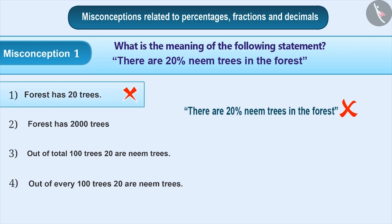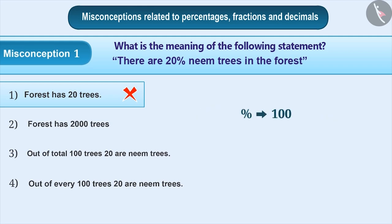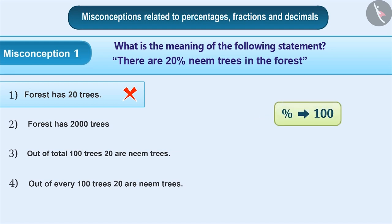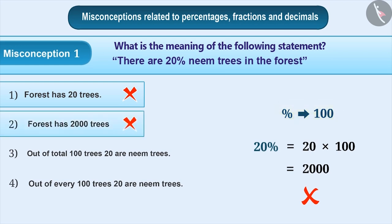Some students know that the percent sign is used in the context of 100, but they get confused with the meaning of percent — whether it is 100 or 1 by 100. This confusion is due to a lack of proper understanding of the percentage concept. Some students consider the percent sign as equal to 100 and obtain the value of 20% as 2000. This is also an incorrect understanding. Therefore, option 2 is incorrect.